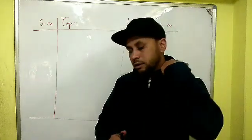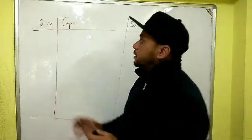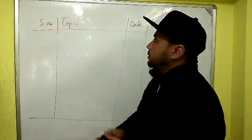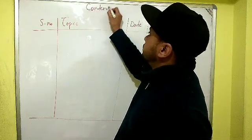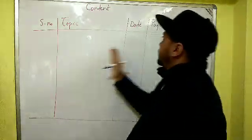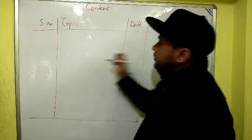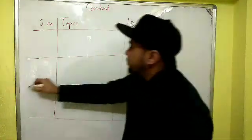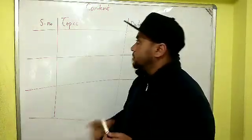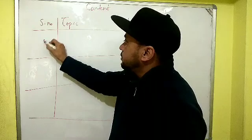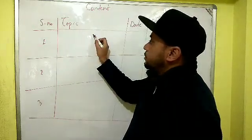Before we start the project, the first page should be your contents page. This contents table comprises four columns and three rows. The first column is the serial number, so you write one, two, and three.